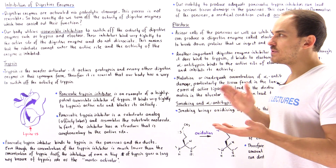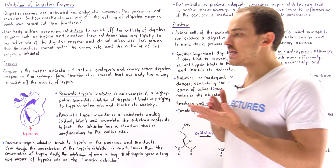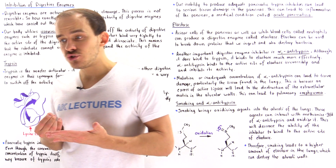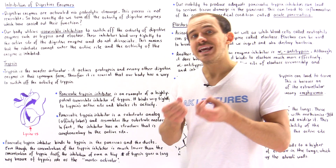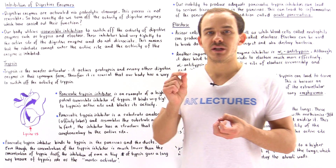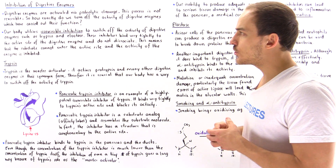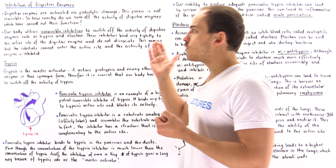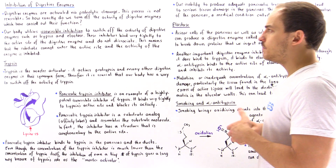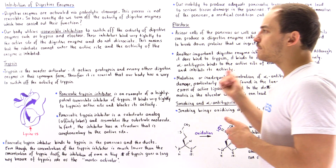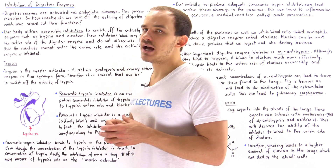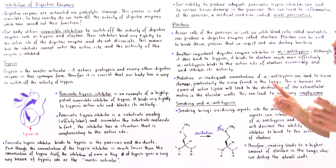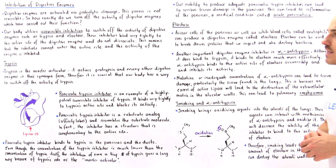Because we don't want our digestive enzymes to damage our own tissue, our cells use irreversible inhibitors to turn off and inhibit the activity of these functional enzymes. Our body utilizes irreversible inhibition to switch off the activity of many types of digestive enzymes — the ones we'll focus on in this lecture are trypsin and elastase.